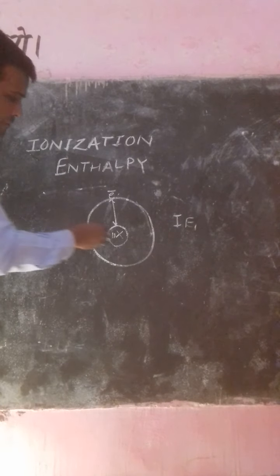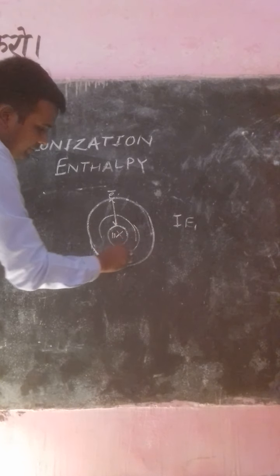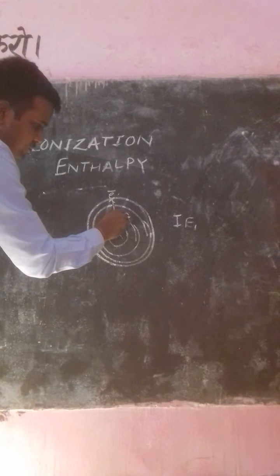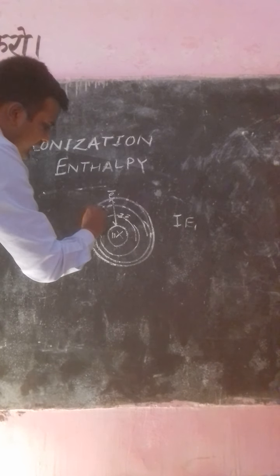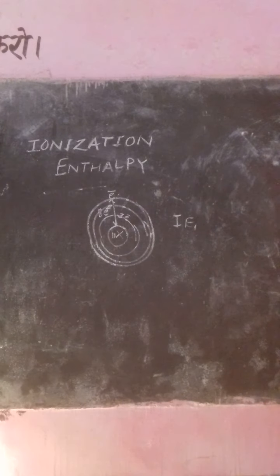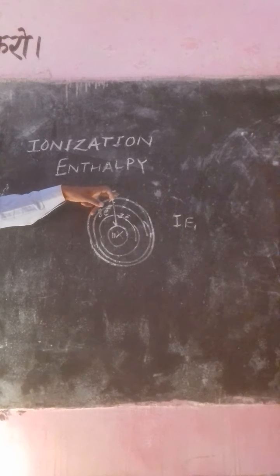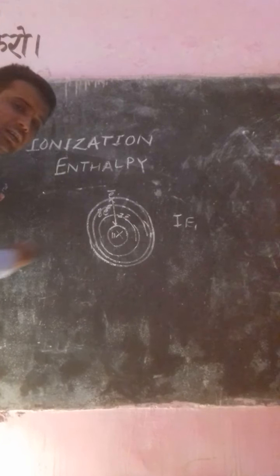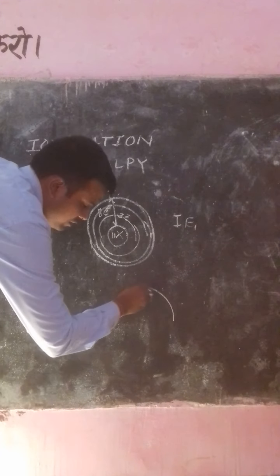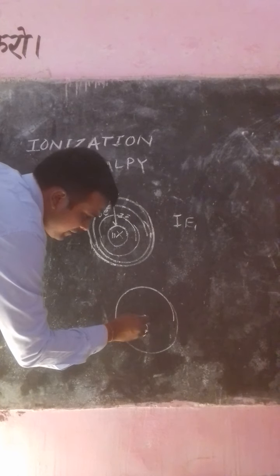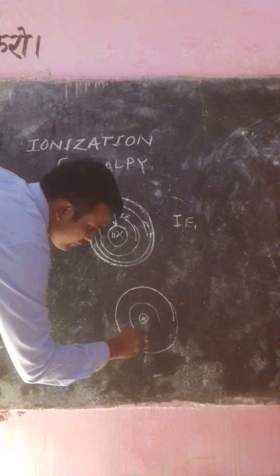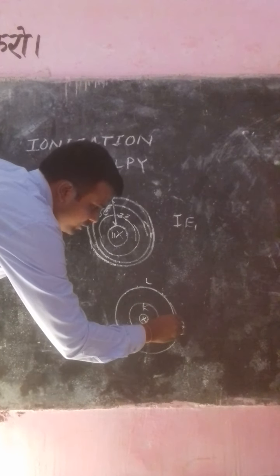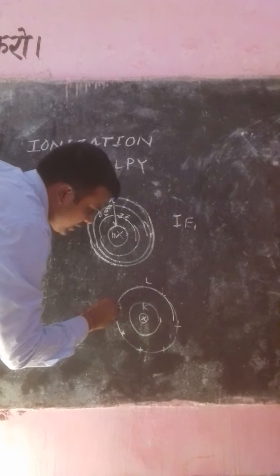If you look at the orbital diagram of this atom, it will be like this: K-shell, L-shell, M-shell. K-shell will contain two electrons, L-shell will contain eight electrons, and M-shell will contain one electron. So you are removing the electron from M-shell. M-shell is far away from the nucleus. If you want to remove the next electron, that next electron is present in L-shell, which contains eight electrons.